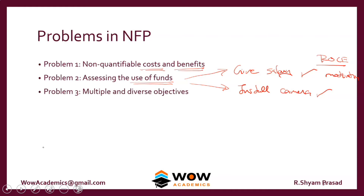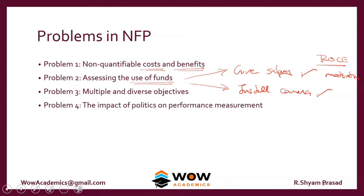There are multiple and diverse objectives. For police, it's about preventing crimes, ensuring safety, and building confidence among the people. They have multiple objectives, so it's very difficult to trade one thing with another. There is also the impact of politics on performance measurement — what has to be measured is again a problem. So there are multiple problems in NFPs.